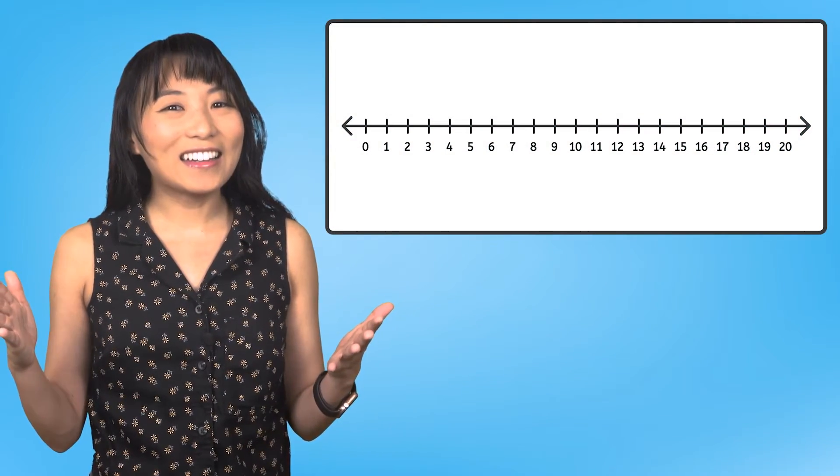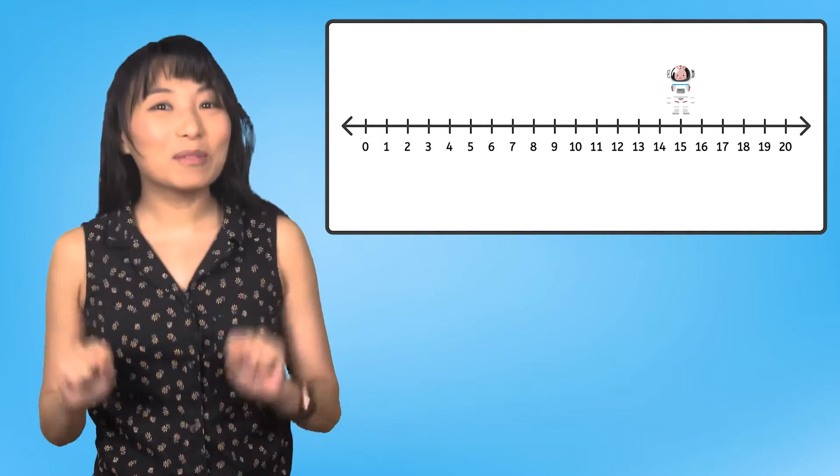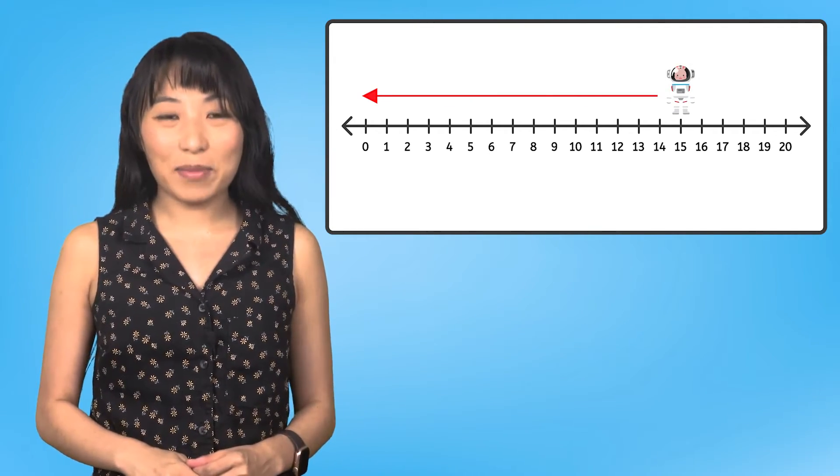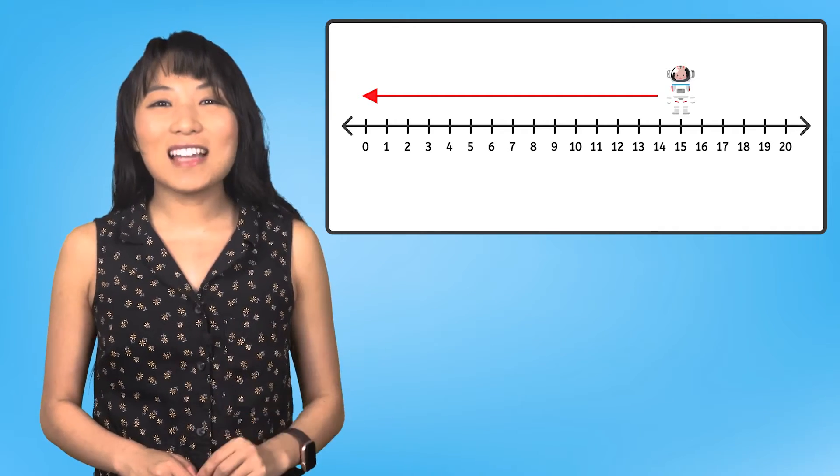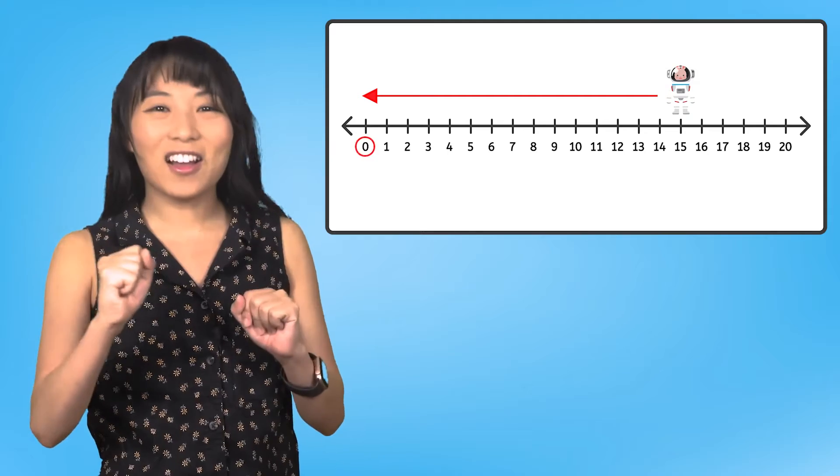When we count backward, it is helpful to count along using a math tool like a number line. We will follow Backward Bunny as she moves backward along the number line, one number at a time, until we get all the way to zero.